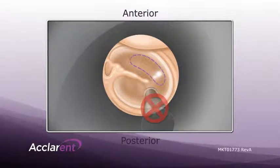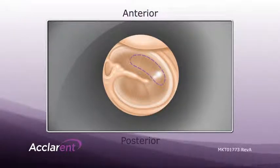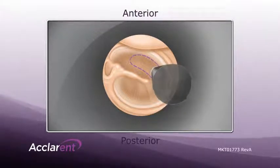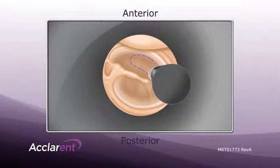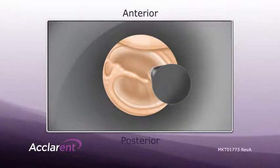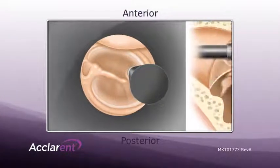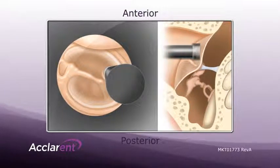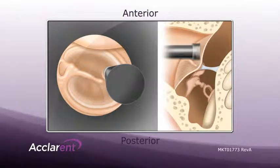For proper deployment of the tympanostomy tube, it is important to achieve circumferential apposition of the device tip against the tympanic membrane. In some cases, such as in a highly angled tympanic membrane, the device tip may contact the TM without achieving circumferential apposition.